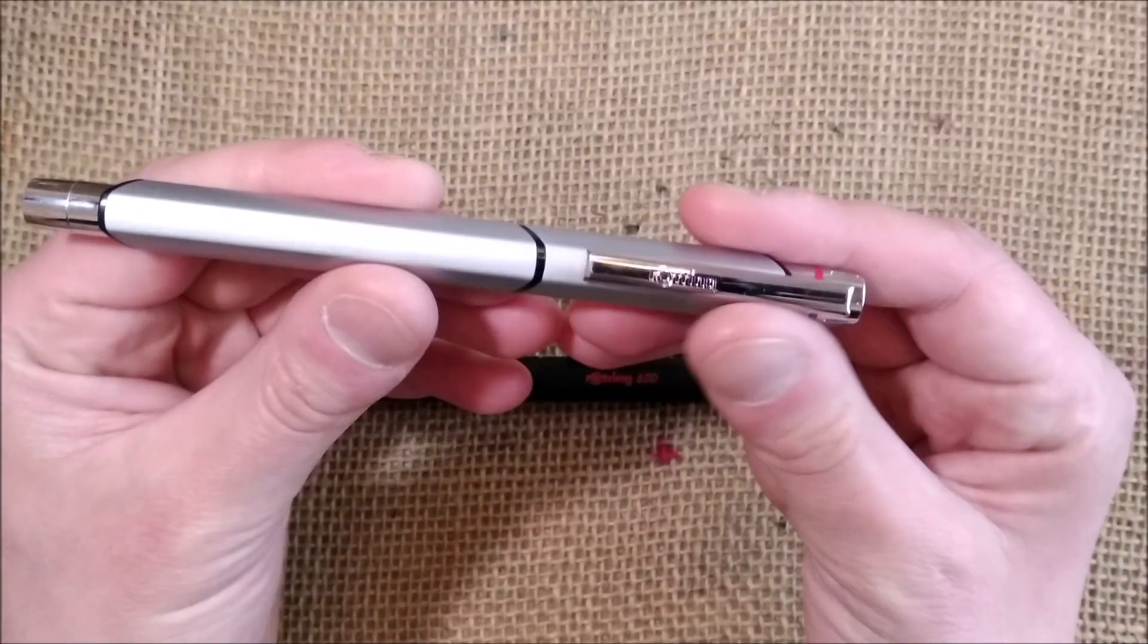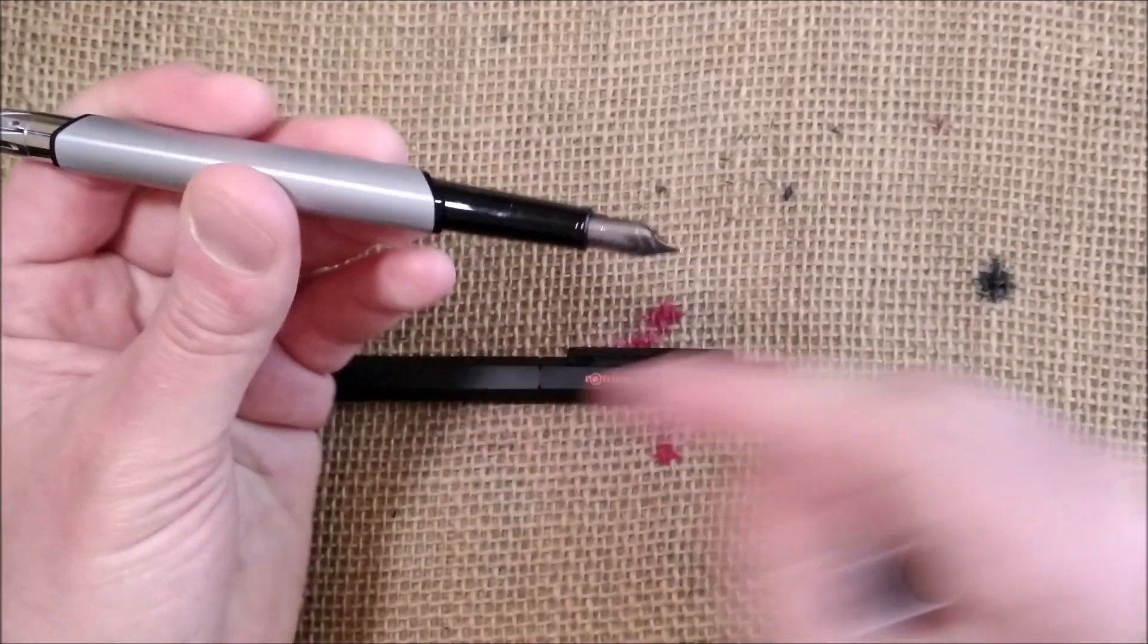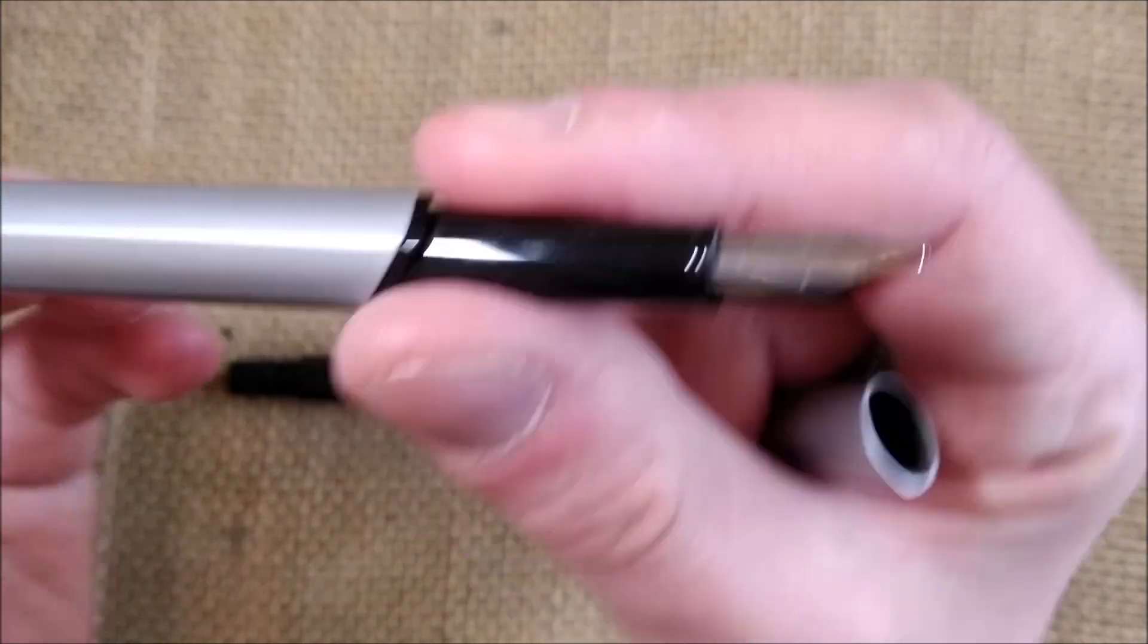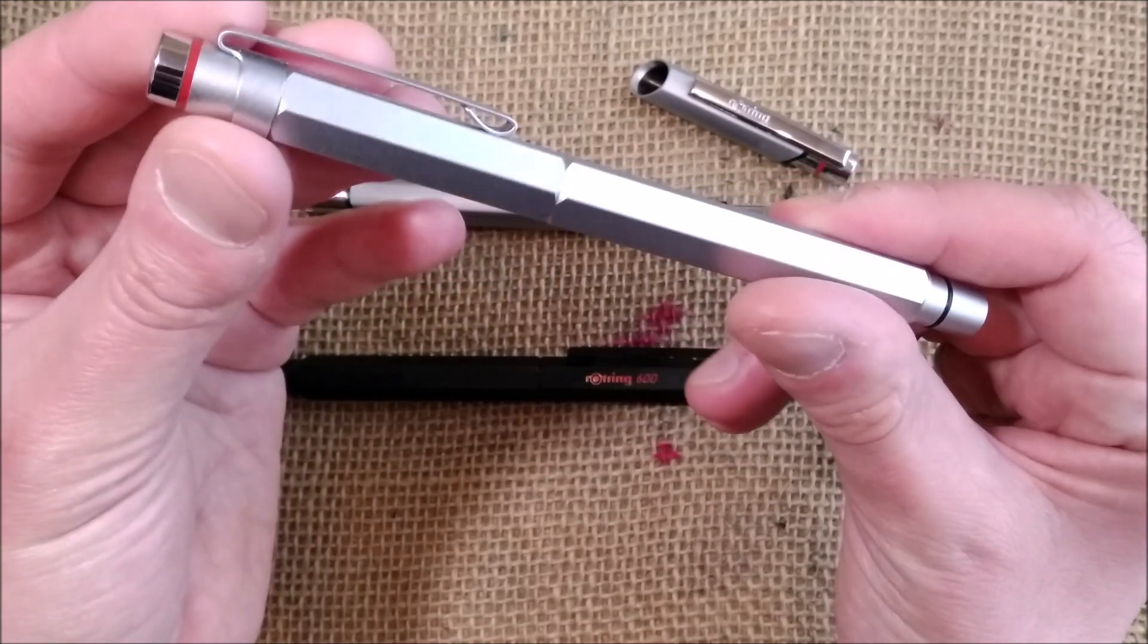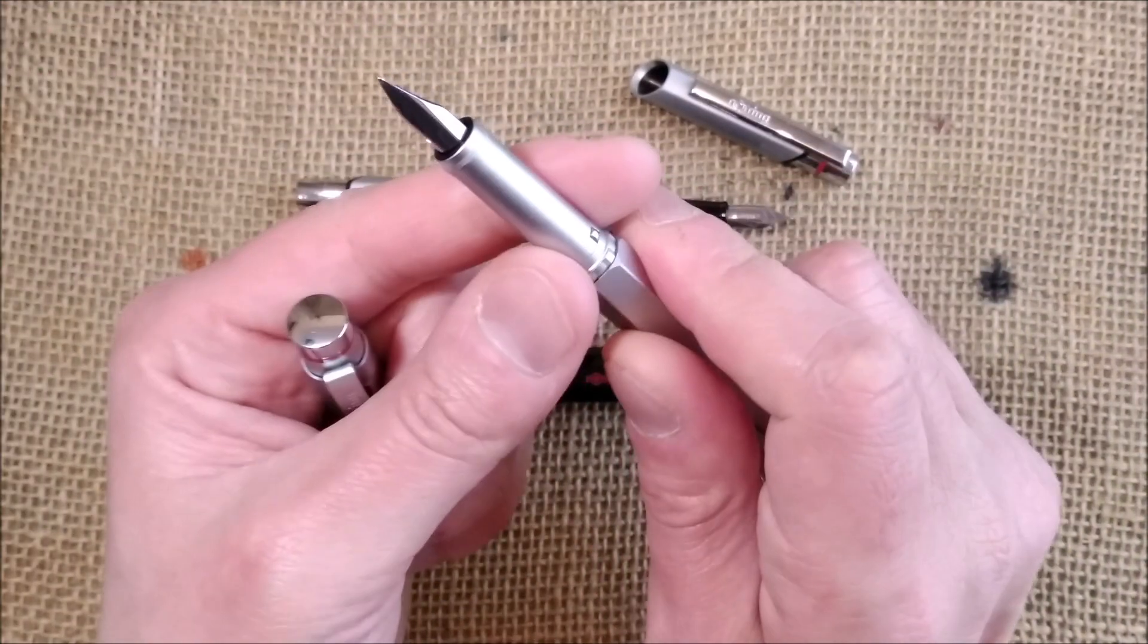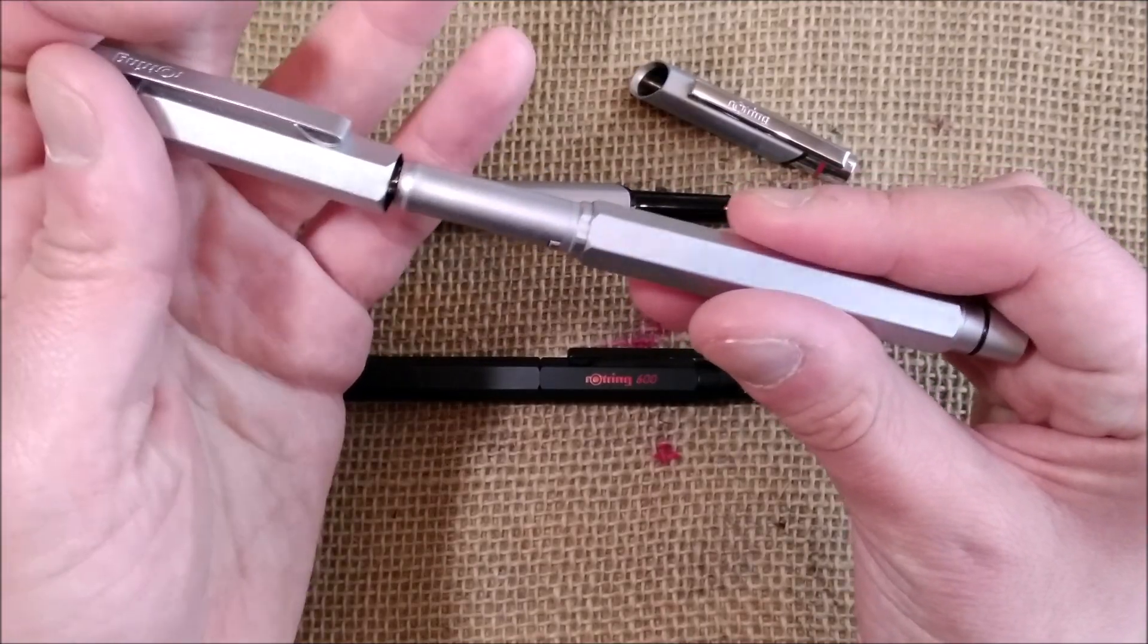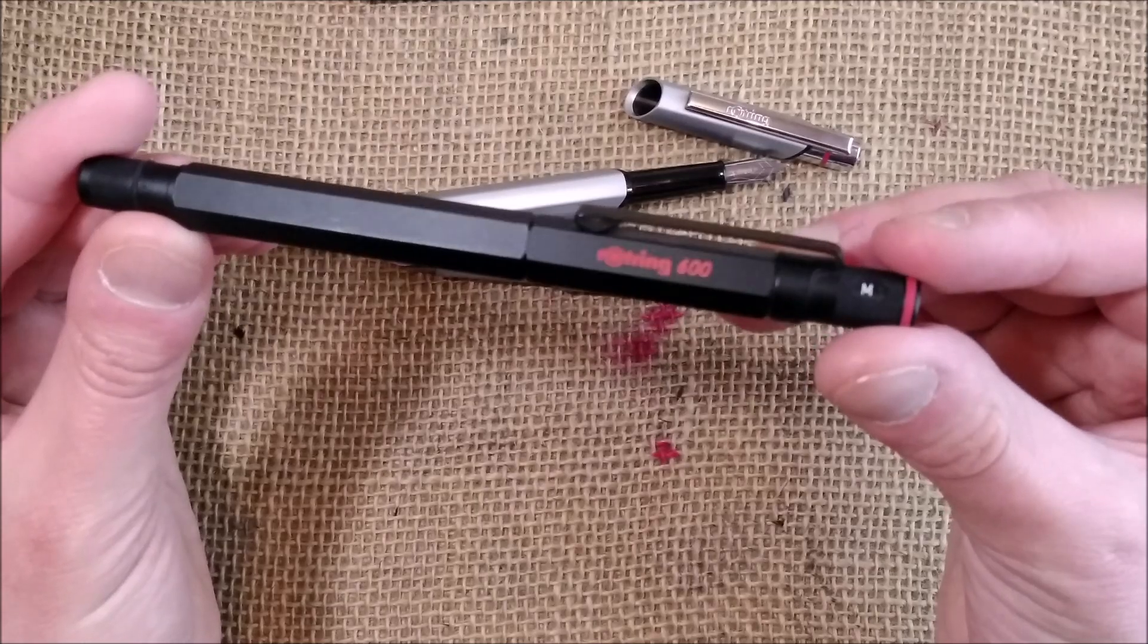And I already had two Rotring Newton pens. This is one which has this same kind of hexagonal shape. This one has a different kind of nib, different kind of section. And I have this one for a long time now, which is also a Rotring Newton.